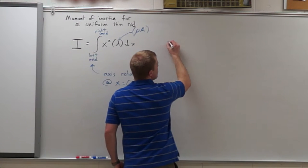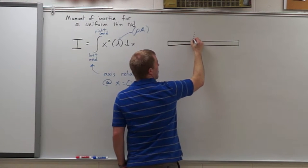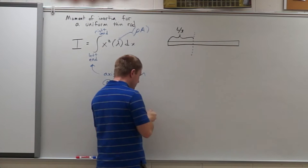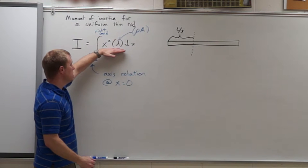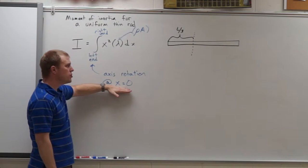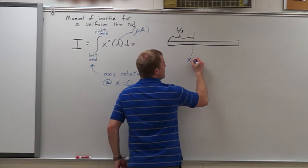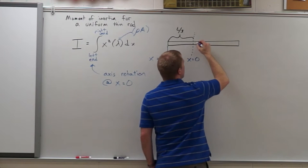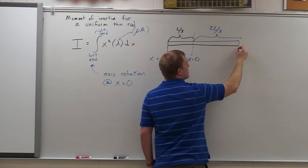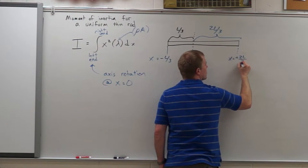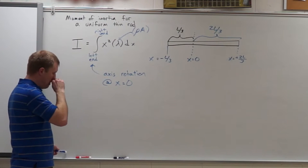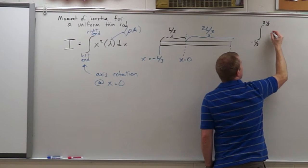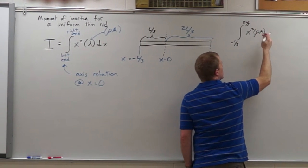We're going to take a uniform thin rod and find the moment of inertia about an axis that is a third of the length from one end — at L over three. With the axis of rotation at x equals zero, the left end is at negative L over three, and the right end is at positive two L over three. So our bounds are set. We integrate from negative L over three to two L over three of x squared times density times cross-sectional area dx.